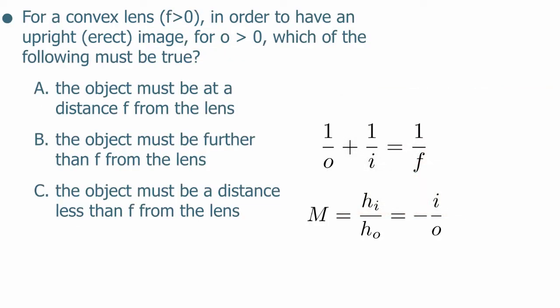Let's do another clicker question — this is a tough one, so I'll give you plenty of time. We have a convex lens with F greater than 0. In order to have an upright (erect) image for O greater than 0, meaning the object is on the correct side of the lens, which of the following has to be true? The object must be a distance F from the lens, further than F, or less than F from the lens. Work together using the thin lens equation and the definition of magnification.